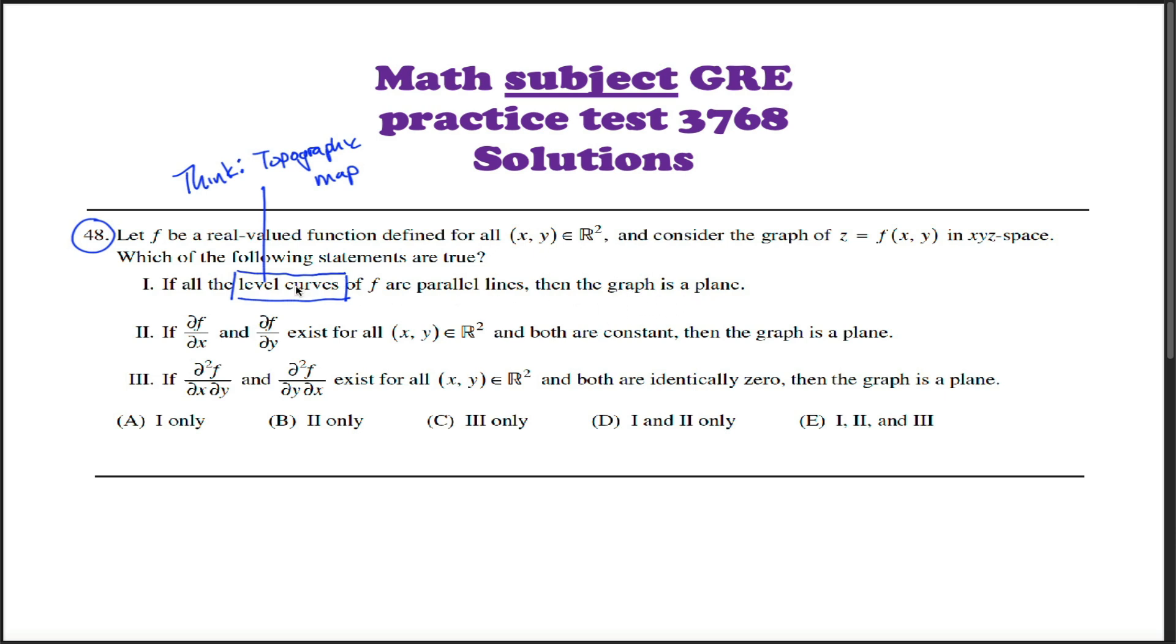If the graph is a plane, then certainly all those lines will be parallel, but the question is about the converse, and that converse is false. The first example that comes to mind for me would be if we let z be equal to maybe x squared.